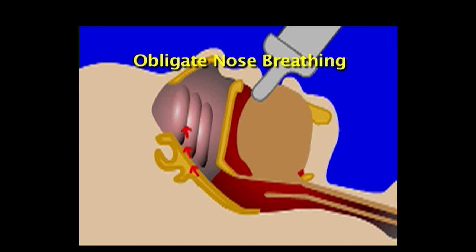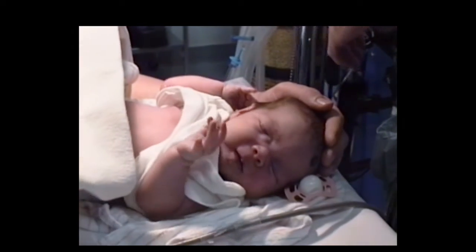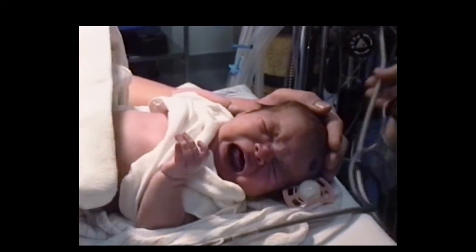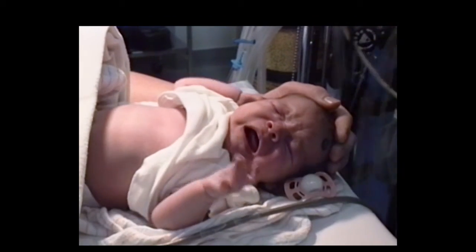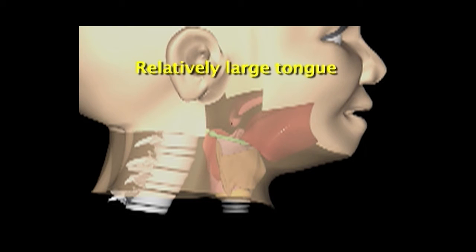The ability to breathe and swallow at the same time is called obligate nose breathing. All mammals other than the adult human are obligate nose breathers. However, this anatomical configuration places the child at greater risk of airway obstruction and makes airway management more challenging. A newborn infant breathes through his nose and can suffocate if the nose is obstructed. The only time newborns breathe through their mouths is when crying. A congenital defect known as choanal atresia occurs when the nasal passage is narrowed or blocked by tissue. Newborns with bilateral choanal atresia may need resuscitation at delivery. The baby's relatively large tongue more easily obstructs the airway. The higher position of the larynx in the neck makes the larynx appear more anterior during intubation, since it's harder to displace the surrounding soft tissue forward and out of the line of sight.